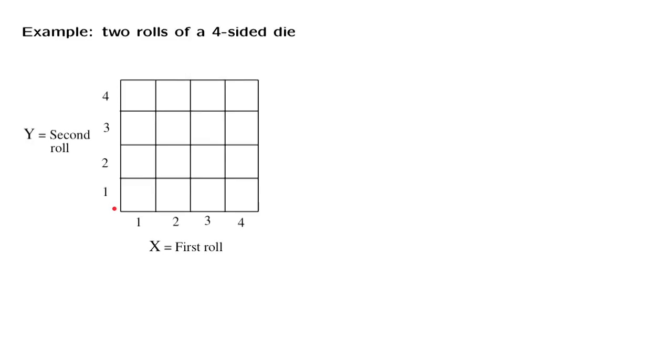We assume, to keep things simple, that each one of those 16 possible outcomes has the same probability. So each outcome has probability 1 over 16.